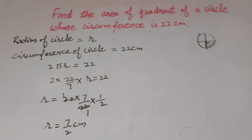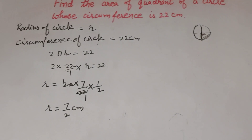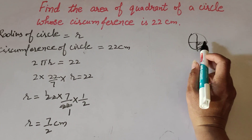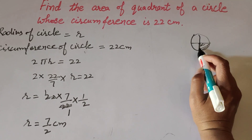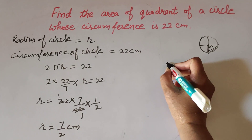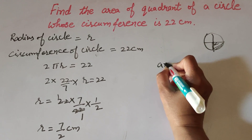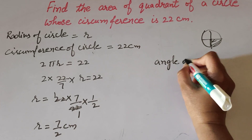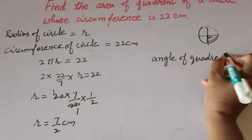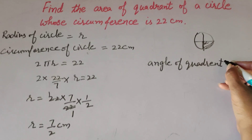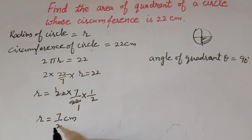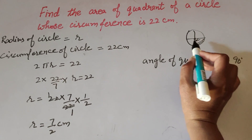Now we find the area of the quadrant of the circle. If we divide the circle into 4 parts, each part is known as a quadrant. The angle of the quadrant of the circle is equal to 90 degrees, because each angle of a quadrant equals 90 degrees. The radius of circle that we found is 7/2.